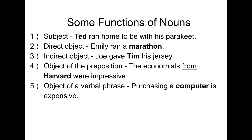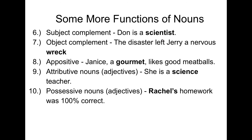That whole phrase is the subject. Scientist describes the subject Don — scientist is the subject complement. Rec describes the direct object Jerry — rec is the object complement. Gourmet describes Janice — this noun or noun phrase sometimes describes the noun in front of it. Science modifies what type of teacher we're talking about; in this case this attributive noun functions like an adjective. Rachel's homework tells you who the homework belonged to, and Rachel's functions like an adjective.